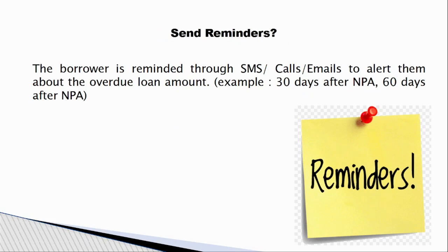Reminders are sent throughout the process. For example, if a loan was taken on January 10th and the first EMI is due on February 10th, a 30-day reminder is sent if unpaid, then a 60-day reminder the next month, and after 90 days an NPA reminder is sent. These reminders can be sent via SMS, calls, emails, or courier letters.